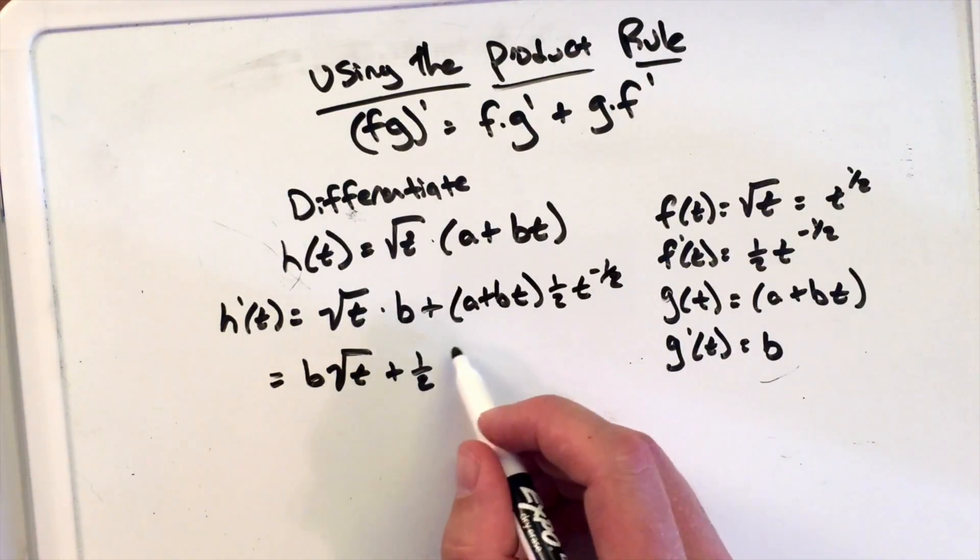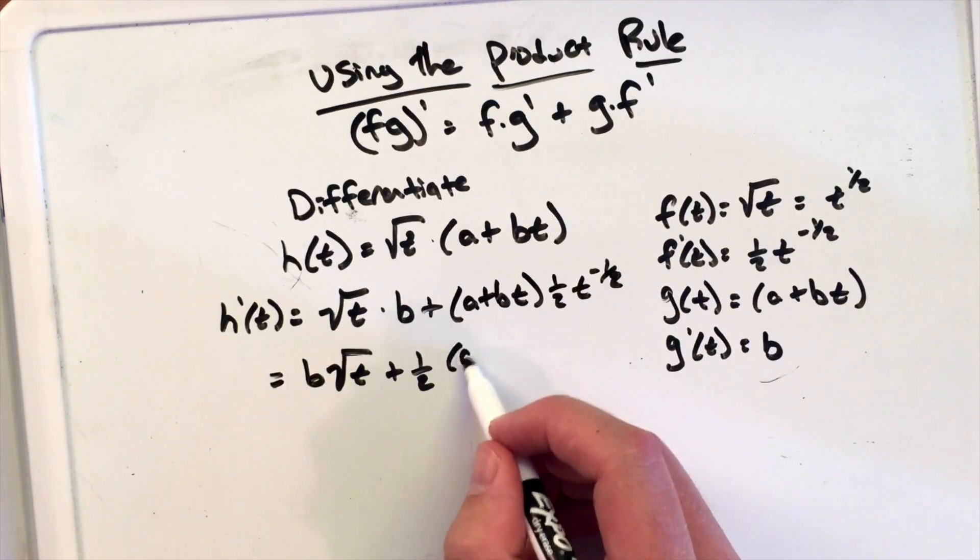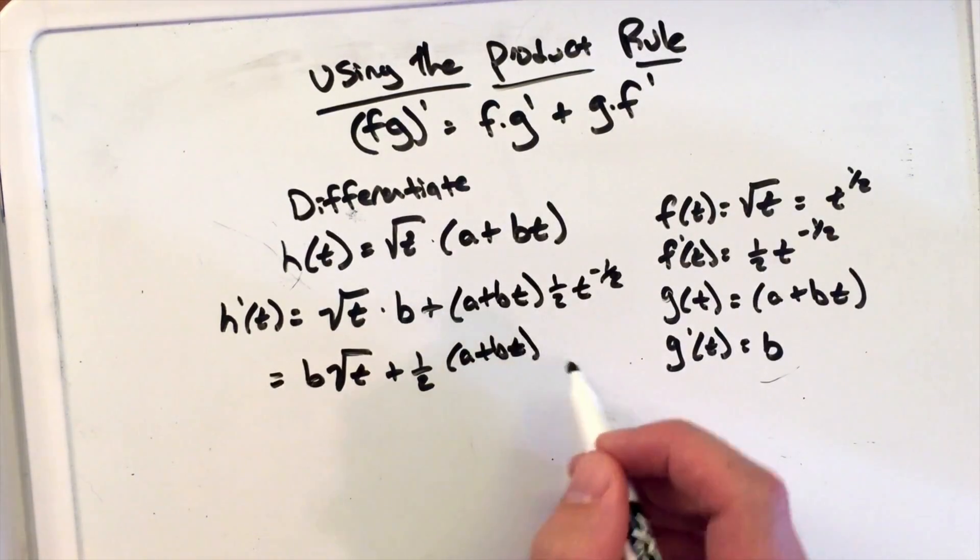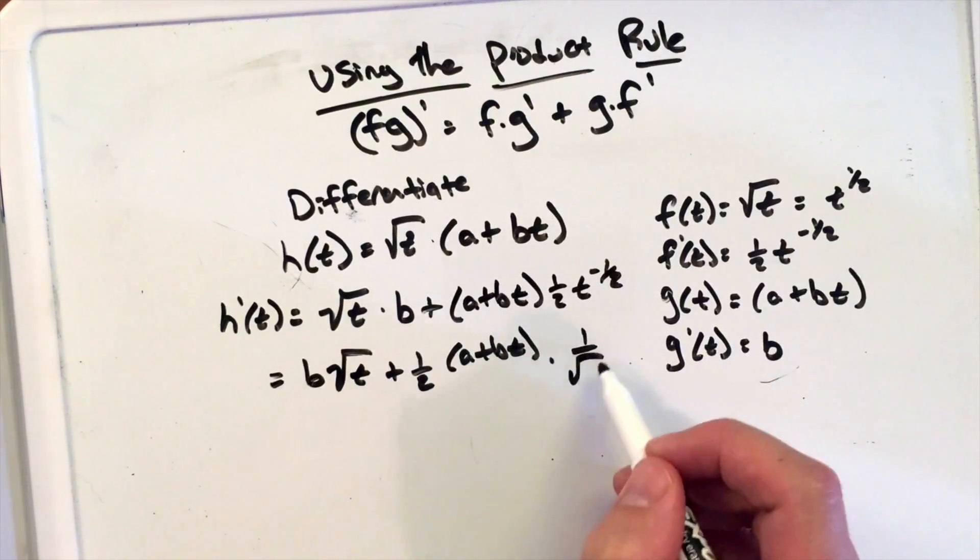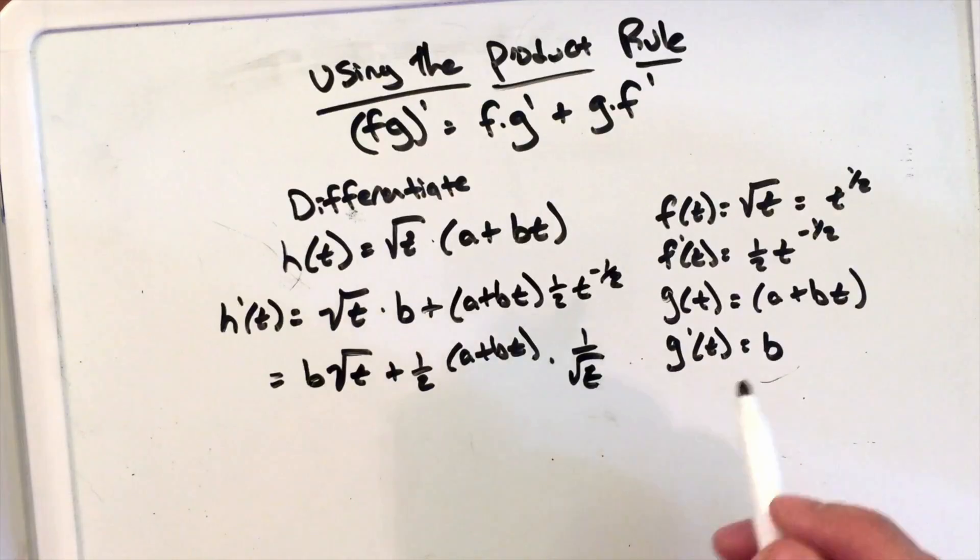in the numerator, a plus bt. Times one-half is the same as the square root, but it's negative, so we have negative square root of t in the denominator.